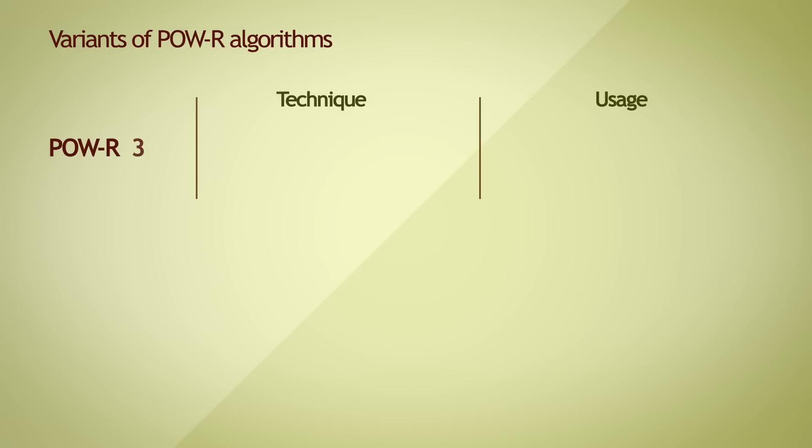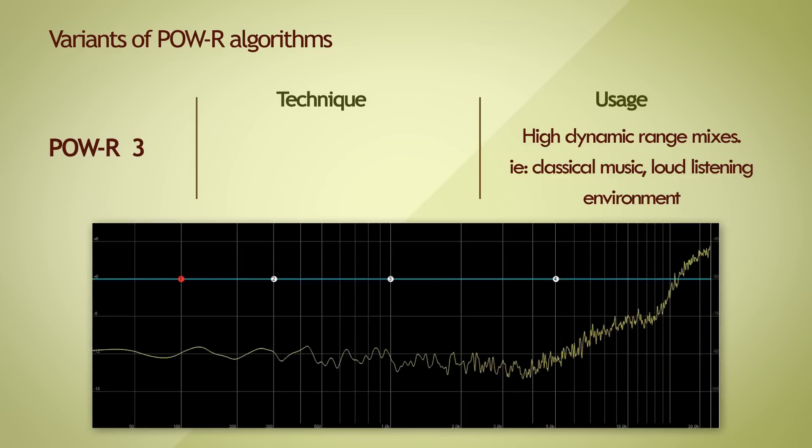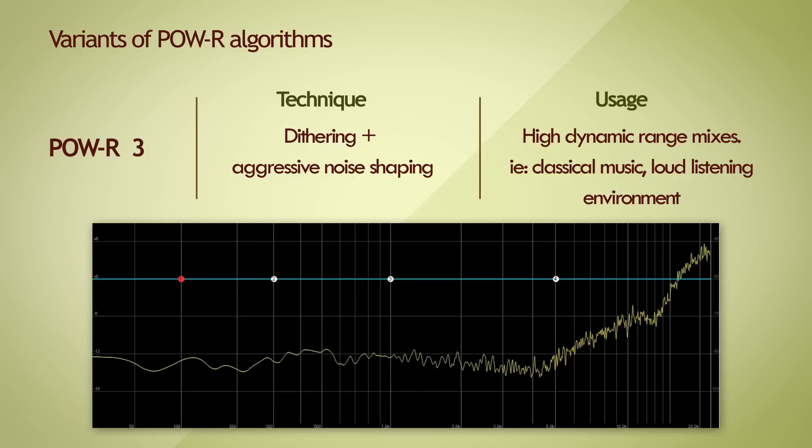The POW-R 3 algorithm is used when the audio is complex in nature, has a really wide dynamic range, like in classical music, and if this audio is intended to be played back in really loud listening environments, like in cinemas and movie theaters. This algorithm implements an aggressive noise shaping curve, which tries to reduce the loudness perception of noise as low as possible.